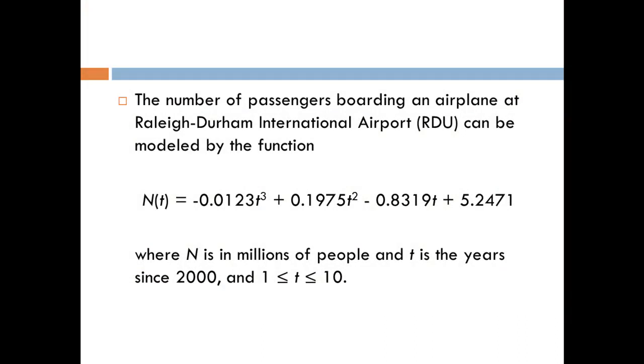Let's look at an example. We know that the number of passengers boarding an airplane at the Raleigh-Durham International Airport can be modeled by the function N(t) = -0.0123t³ + 0.1975t² - 0.8319t + 5.2471.